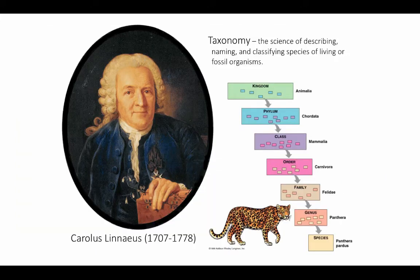As it turns out, this problem was largely solved, at least for scientists, way back in the 18th century by Carlos Linnaeus, who came up with the very familiar system of taxonomy that we use still to this day — the kingdom, phylum, class, order, family, genus, species system that we use to describe and categorize different organisms.